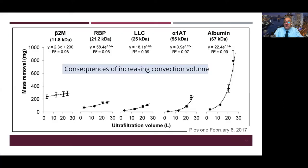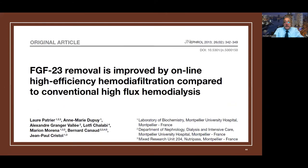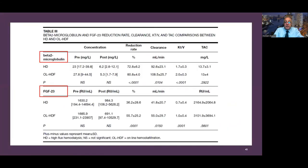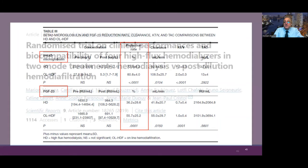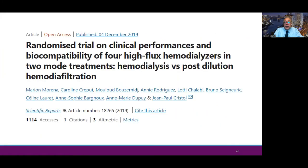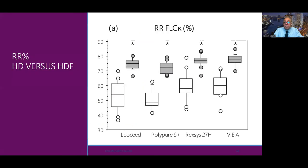However, increasing convection volume above 23 to 25 liters per session in post-dilution mode can carry more albumin loss. FGF-23 and beta-2 microglobulin are both removed more efficiently in hemodiafiltration with significant reduction ratios. Randomized trials confirm that using the same dialysis membrane in high-flux mode converted to hemodiafiltration results in augmented removal of middle molecules via the convection technique.